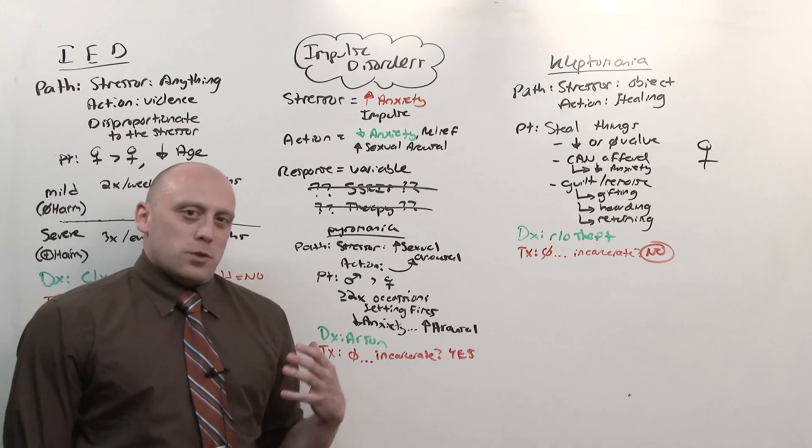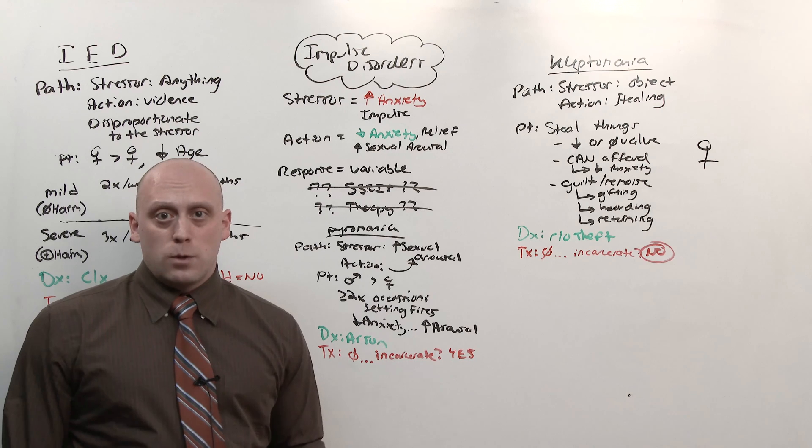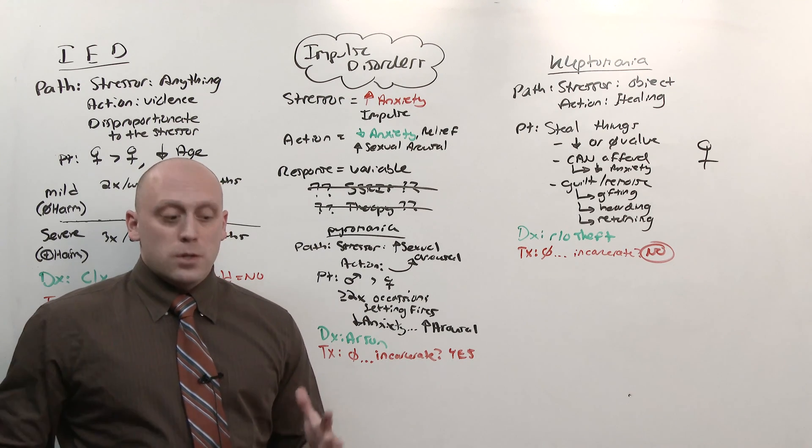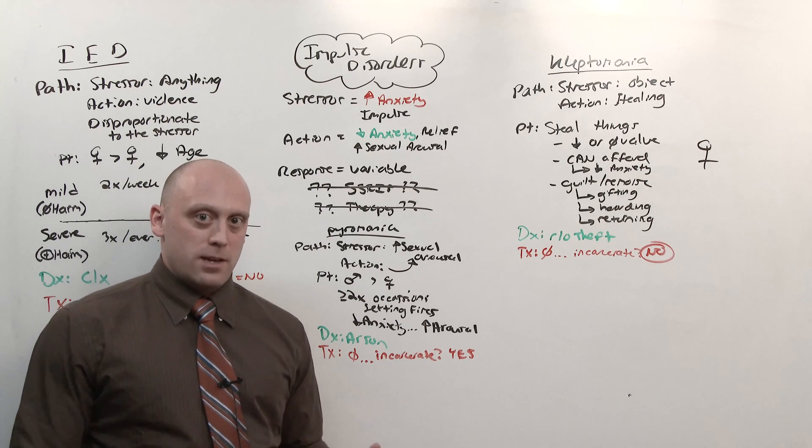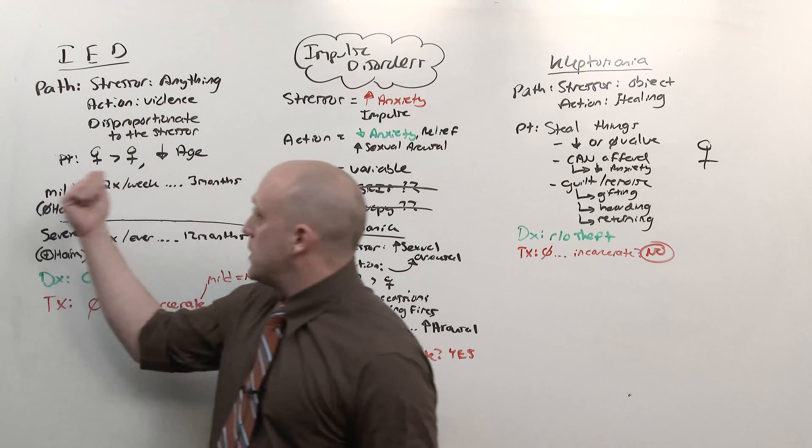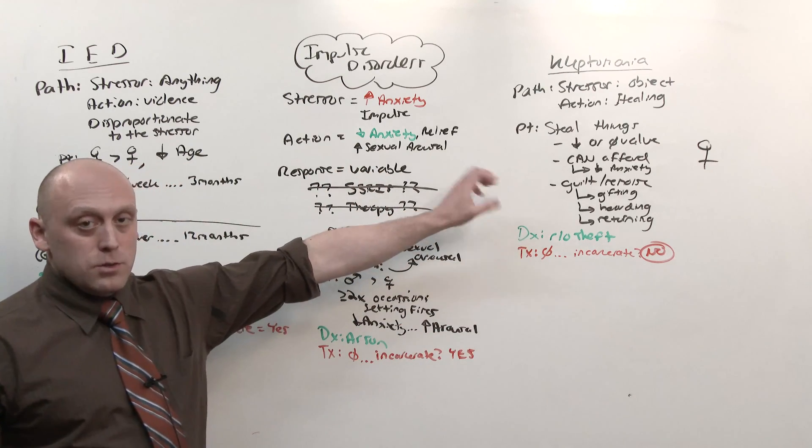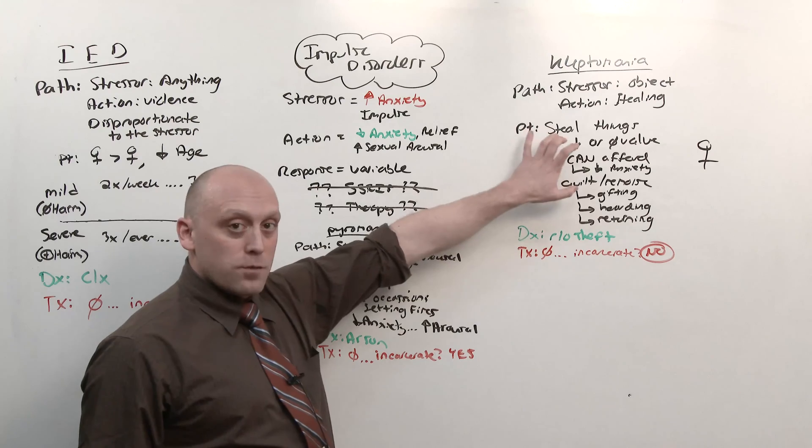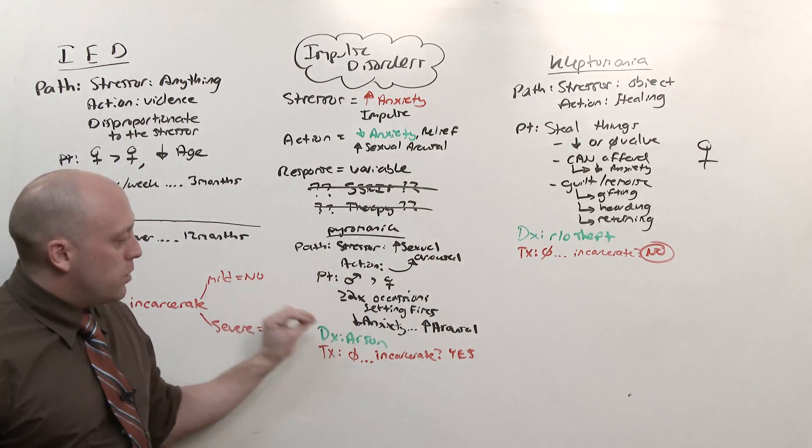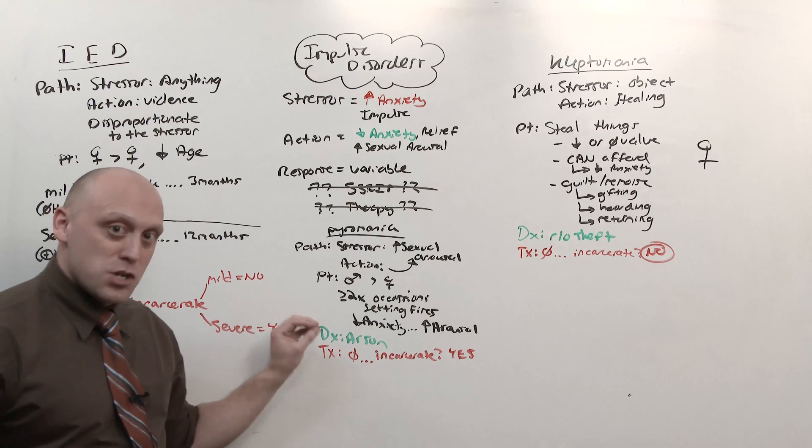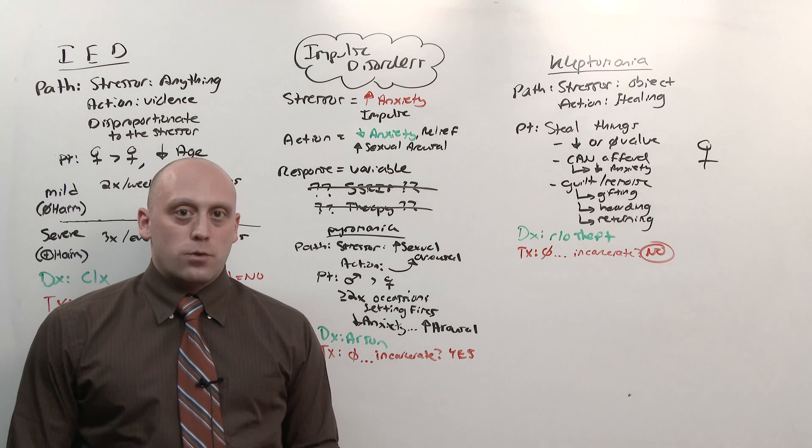So I wanted you to see that impulse control disorders are very similar to anxiety disorders and will have a lot of parallels to obsessive compulsive disorders. There's something that provokes anxiety and doing an action relieves that anxiety. In intermittent explosive, it's committing violent acts. It's usually men. In kleptomania, it's stealing something, usually women, and they steal stuff they can afford of little to no value, but they feel remorse afterwards. In pyromania, it's usually not reduction of anxiety, but instead stimulation of sexual arousal and its lighting of fires. That is the impulse control disorders.